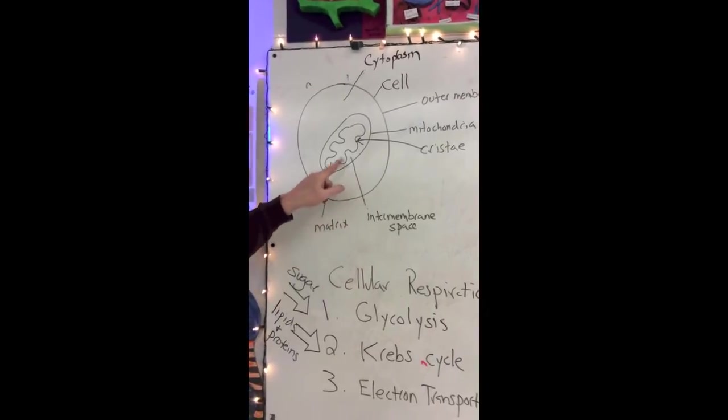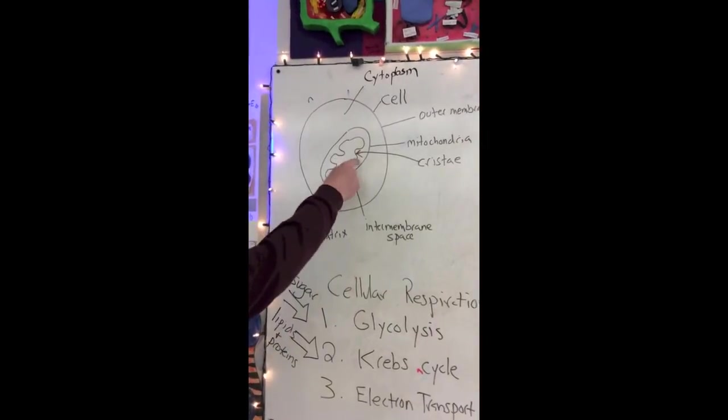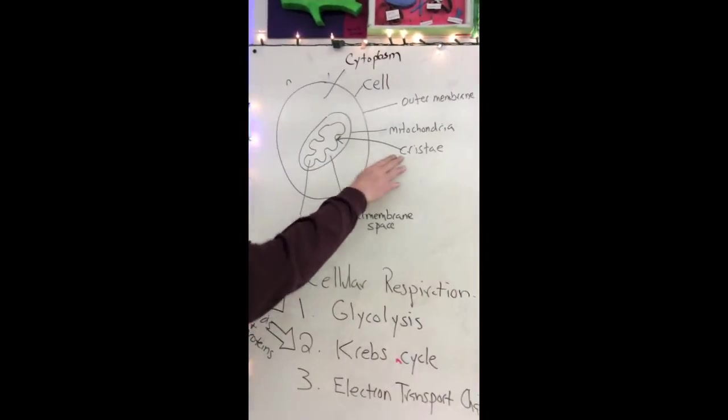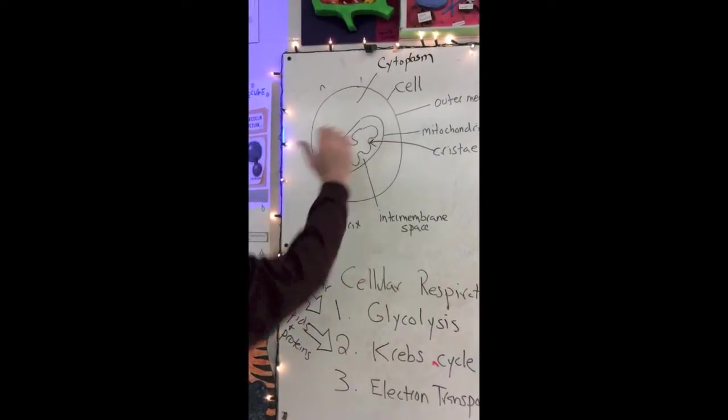This is important to creating a concentration gradient of hydrogen later on. The folds in the membrane are referred to as cristae, and that simply increases the surface area so there's a lot more activity that can occur here.